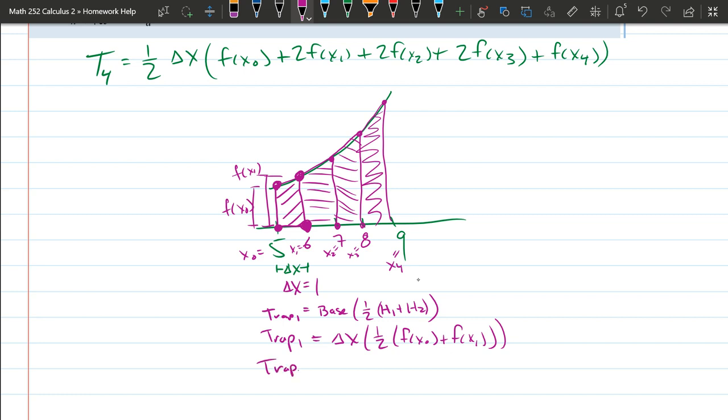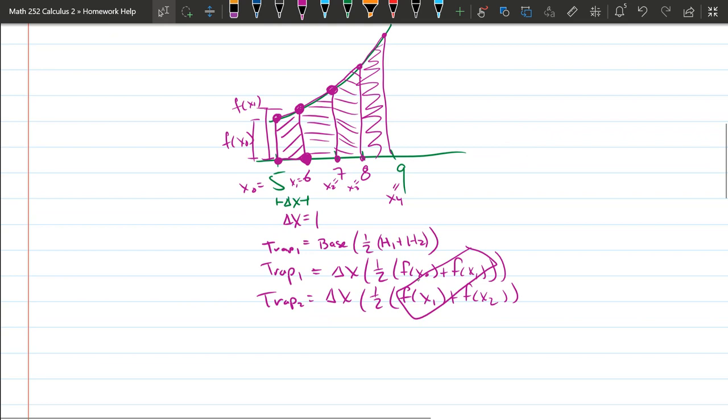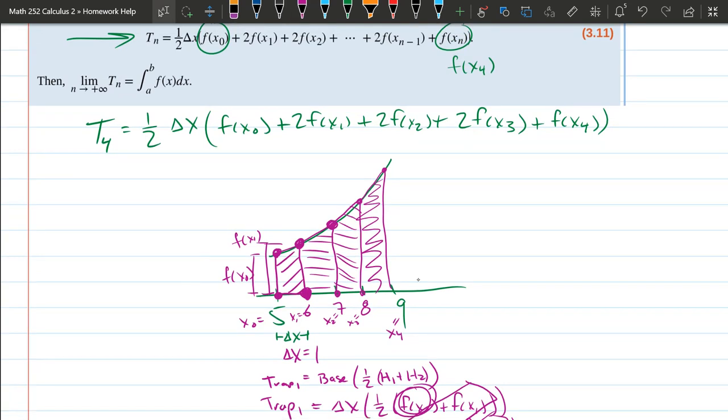That's trap one. I'm only going to do trap two. Same base. We're going to average. Now we're using x one and x two. Those are the two different x values that we're going to f to get the heights. And if you keep going through, what you're going to see is that there's two times we're using f of x one. If I drew the next trapezoid out, I would be using f of x two twice. And there's one by itself, fx zero, and at the very last trapezoid, the very last x value will be used once. And that's exactly what this formula says right here.